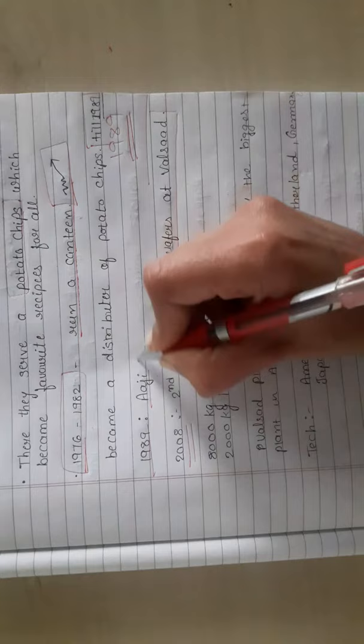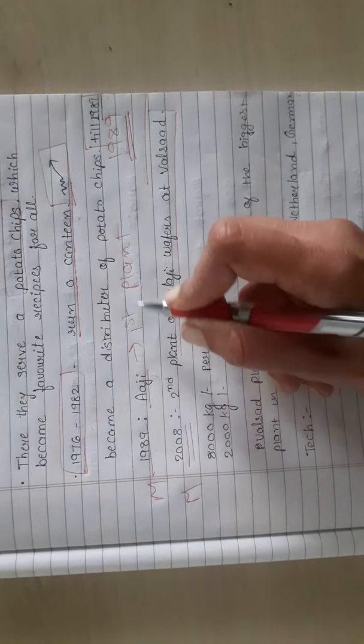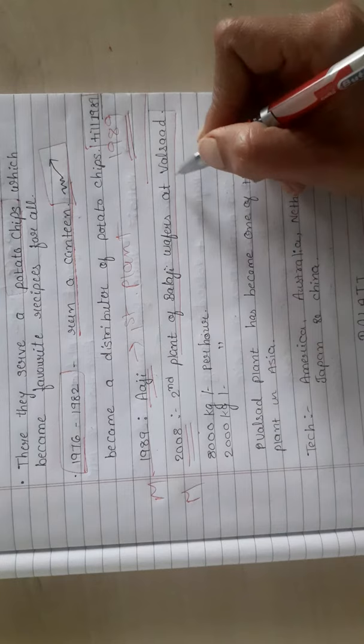When the business of making potato wafers started, they opened their second plant. At Balaji Wafers in Valsad, the first plant was established in 1989 and the second plant started in 2008.